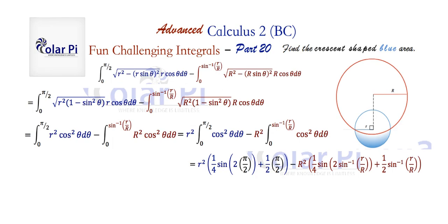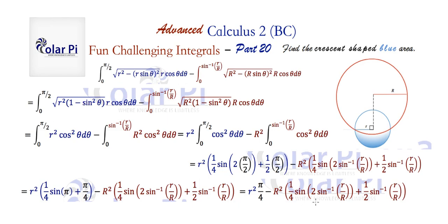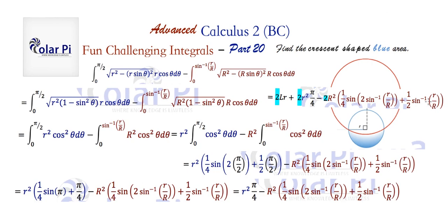Now some simplifying: two times pi over two is pi, and sine of pi is zero, so the quarter times zero term goes away, and our expression reduces. Without knowing the values of little r and big R we can't simplify the sine inverse term further. This is our result for those two integrals — but don't forget to add capital L times little r back on and then multiply the whole thing by two to get the correct final answer, displayed here.